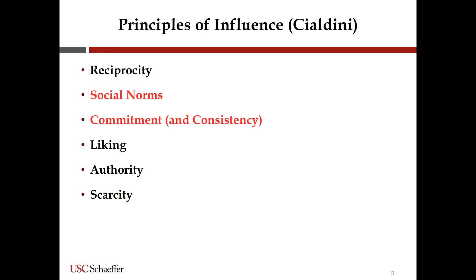We decided to take a different approach and went to the social psychology literature. We looked at work by Robert Cialdini, who went out in the field and worked with salespeople and others who had to influence people in their jobs — and if they didn't, they wouldn't get paid. He came up with these principles of influence: reciprocity, social norms (which I'm going to call peer comparison), commitment and consistency, liking, authority, and scarcity. I'm not going to talk about all of these, but I will mention social norms and commitment and consistency.